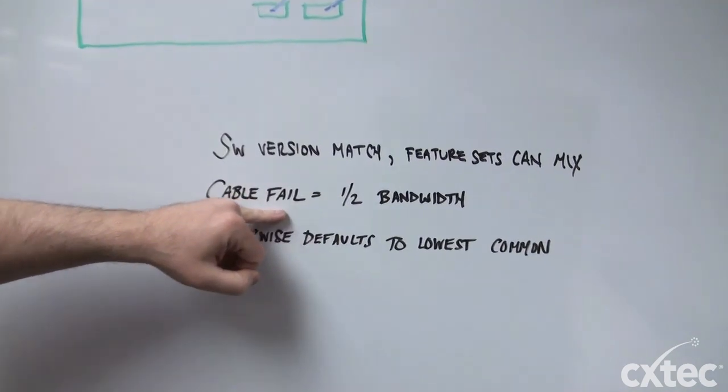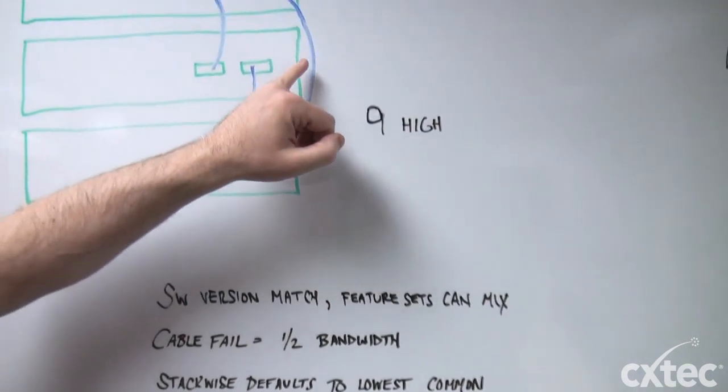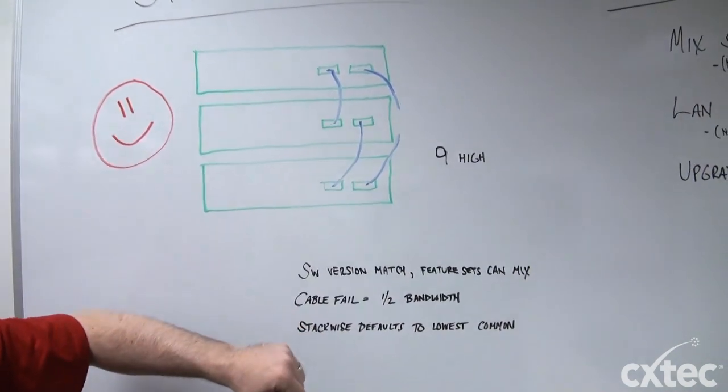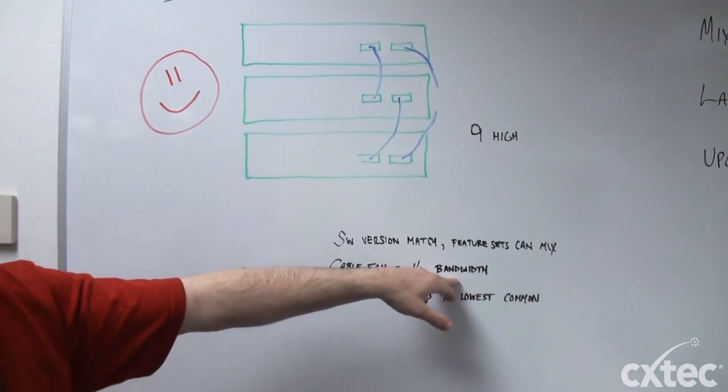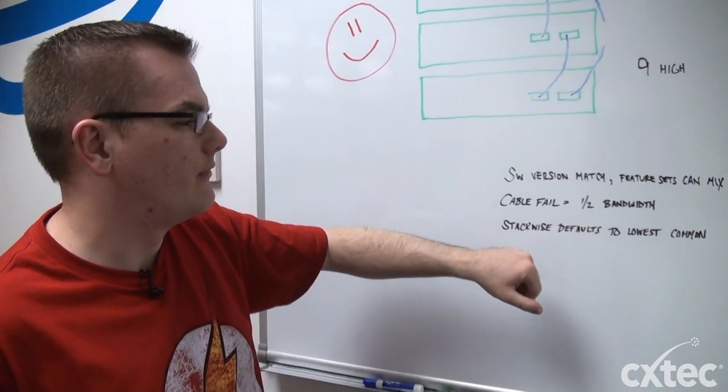Another thing, if there's a cable failure anywhere in here, let's say that this cable here were to break for some reason, you only have half of the available bandwidth along the stack. That's also something not a lot of folks know.